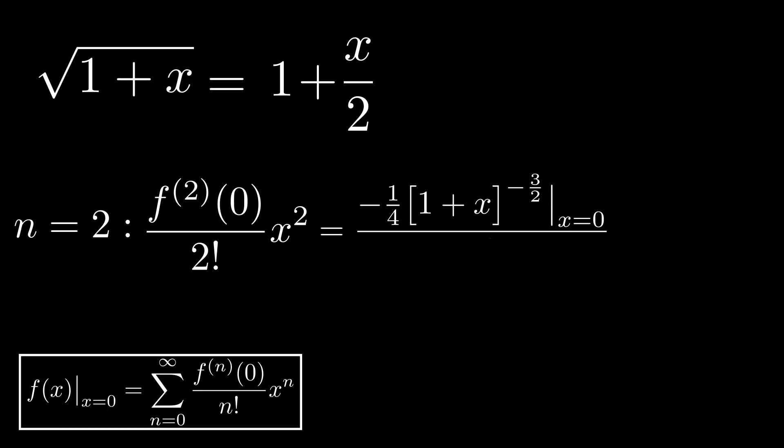In the denominator, we get 2 factorial, and we multiply with x to the power of 2. Filling in x is equal to 0 in the numerator, we are left with minus x to the power of 2 over 8.